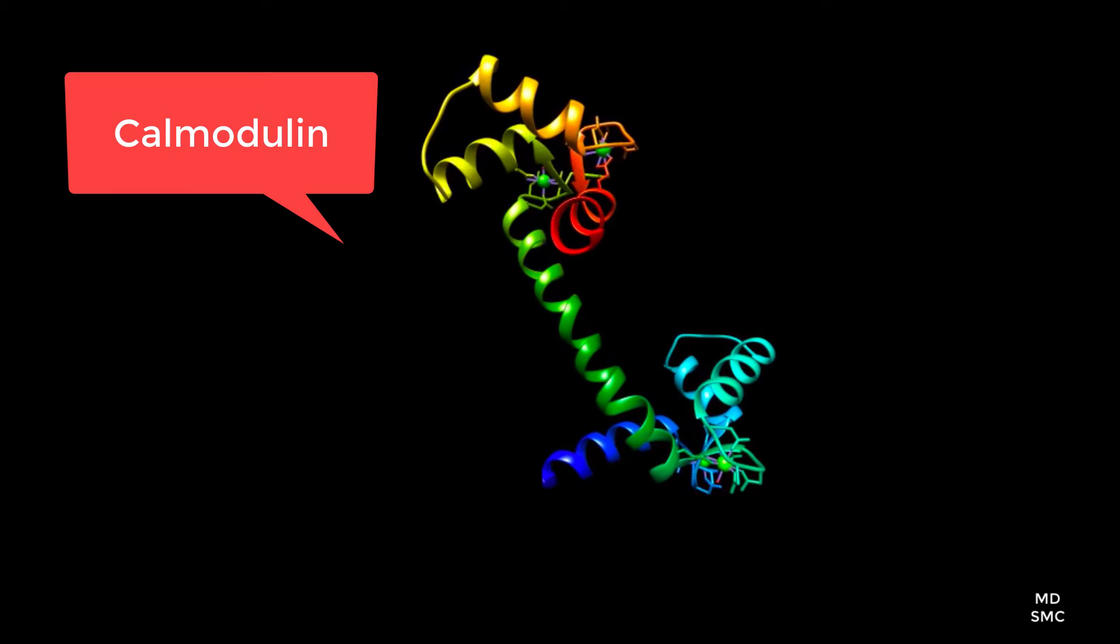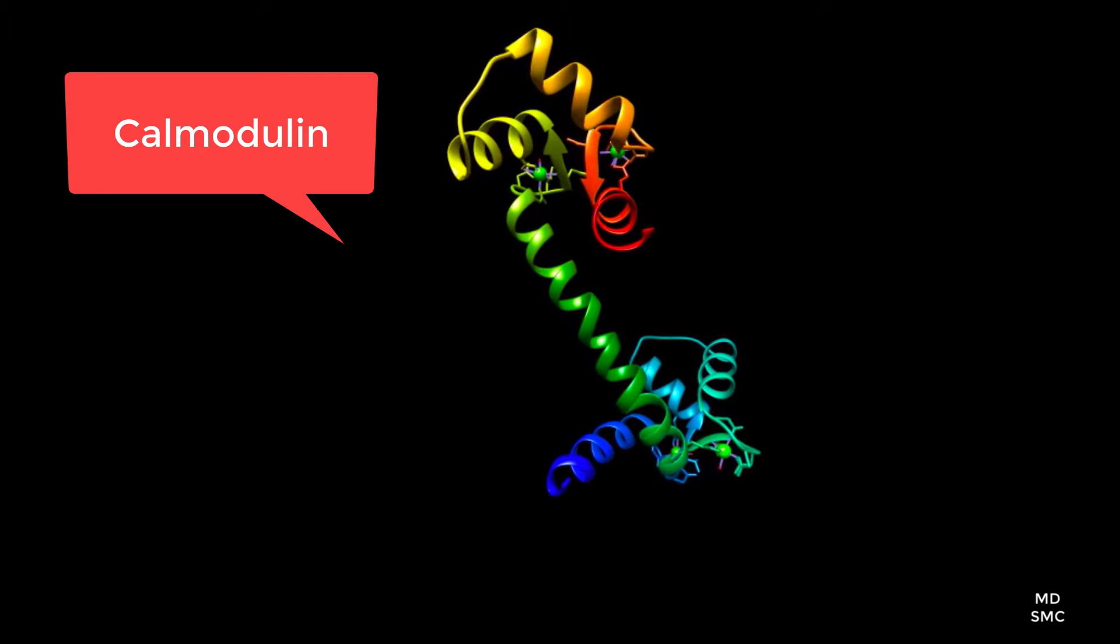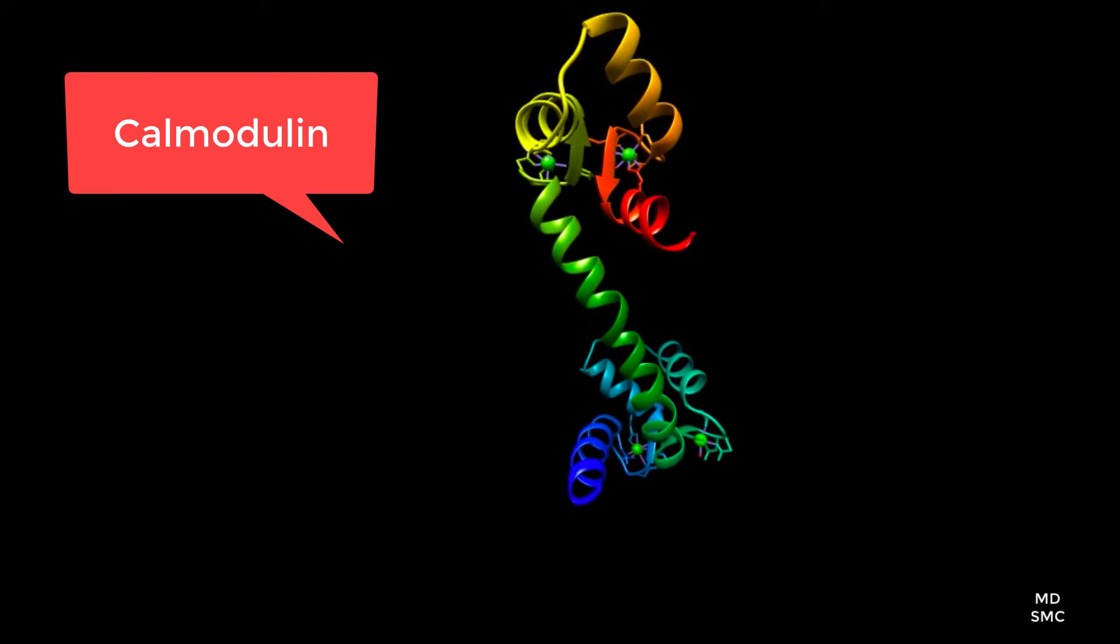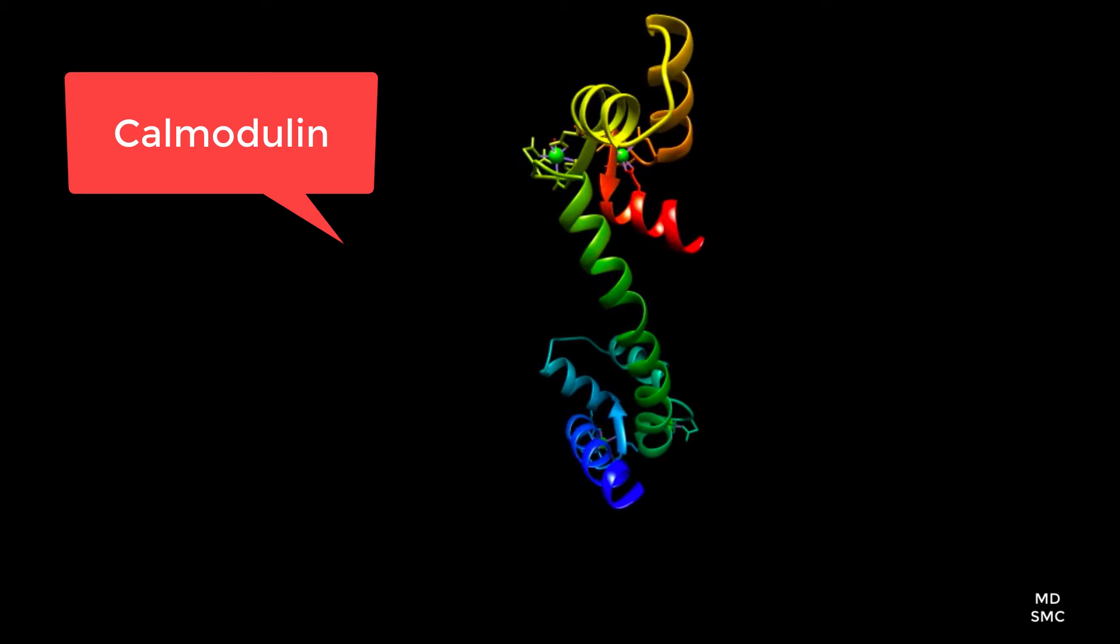The binding activates the intermediate protein. Calmodulin is ubiquitous in all eukaryotic cells and is most often found in the cytoplasm. This ribbon diagram demonstrates the dumbbell orientation.